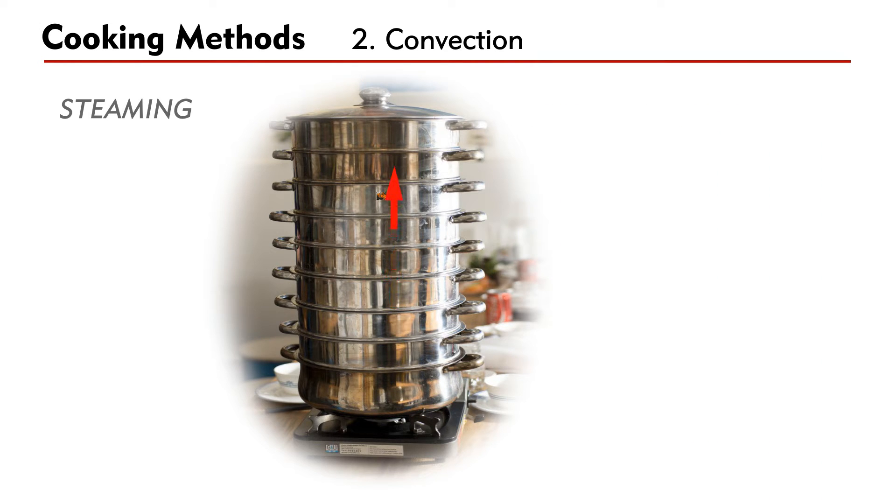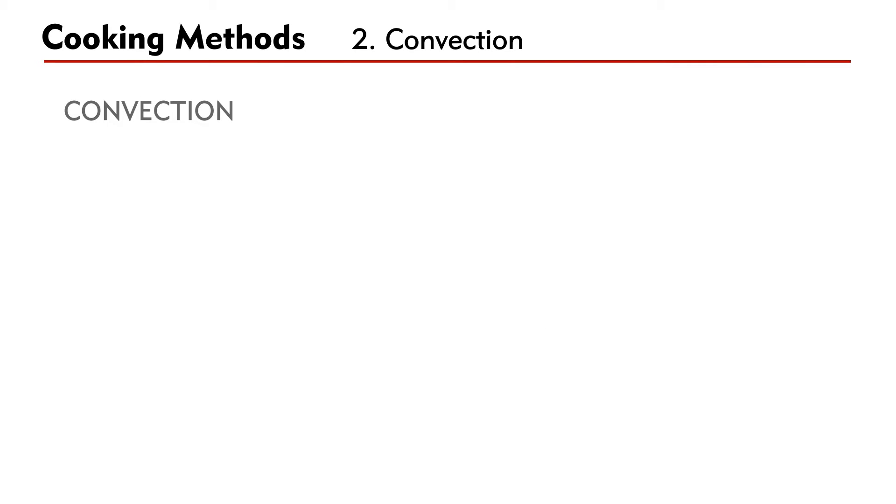Heat flows from the hot object, the steam, to the cold one, the food. Here heat is transferred through a process called convection. Note that in convection, the heat transfer is accompanied by a transfer of matter.